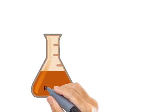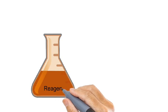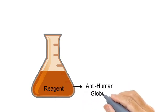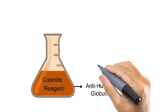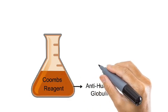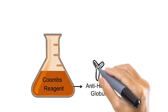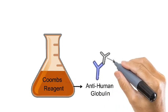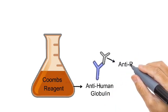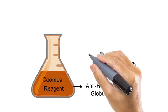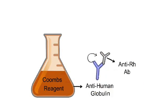To detect such antibody molecules, Coombs developed a reagent called anti-human globulin, now also called Coombs reagent. Anti-human globulin is an antibody molecule that can bind to the anti-RH incomplete antibody. In other words, it is an anti-antibody — an antibody that binds to the incomplete anti-RBC antibody which itself binds to the RBC surface.